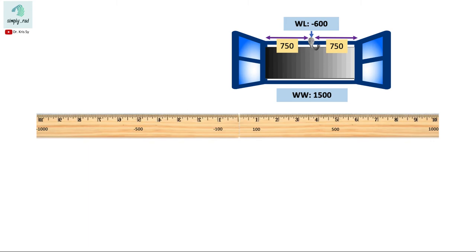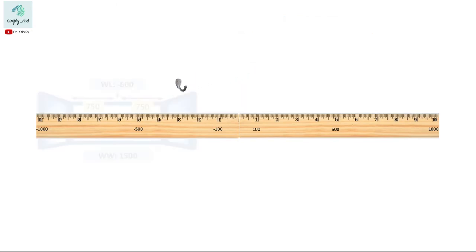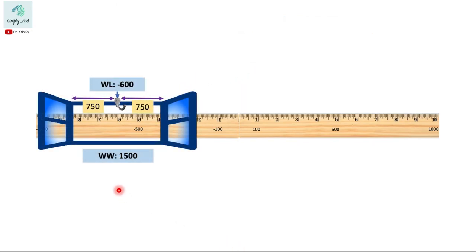Now let us set this center at the designated window level of negative 600 Hounsfield units. The window will now be placed here. This setting will now show all the structures with the Hounsfield units within the range of this window, and this range can be calculated by taking the window level here and adding and subtracting 750 Hounsfield units on each side.